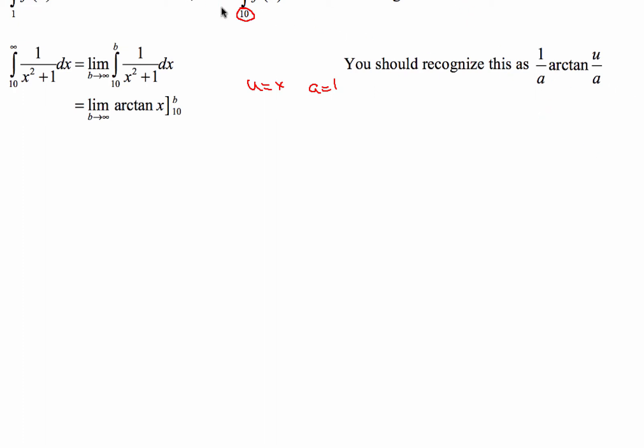So we're going to evaluate this. So as b goes to infinity, and actually this here should be infinity, we're going to have the limit of b going to infinity of arctangent of b minus arctangent of 10. All right, now when b goes to infinity, and this is one of the pieces where you're going to have to remember some of your trig information. So arctangent, do you remember what the domain restriction is for that? Hopefully you do.